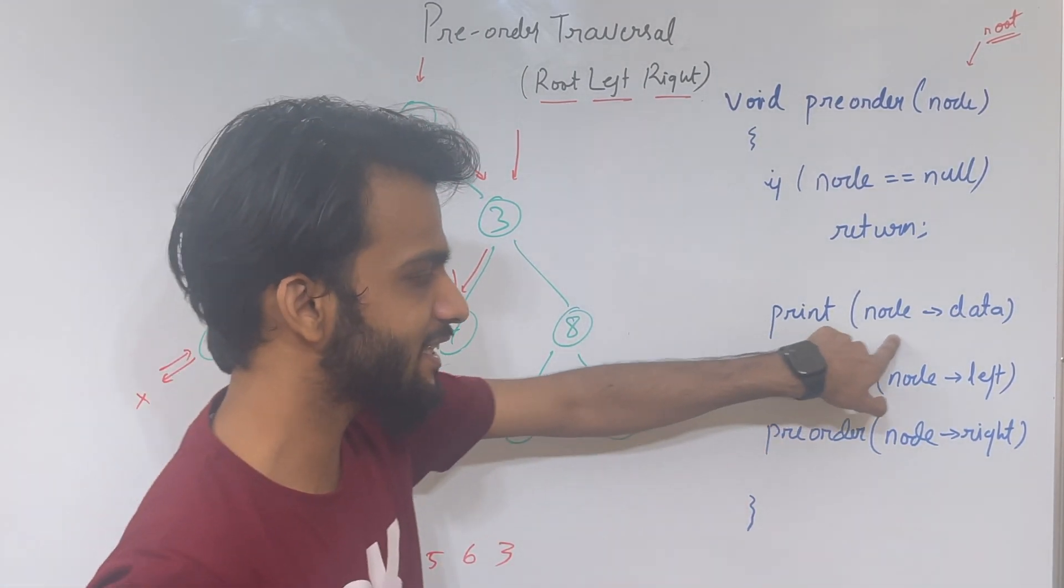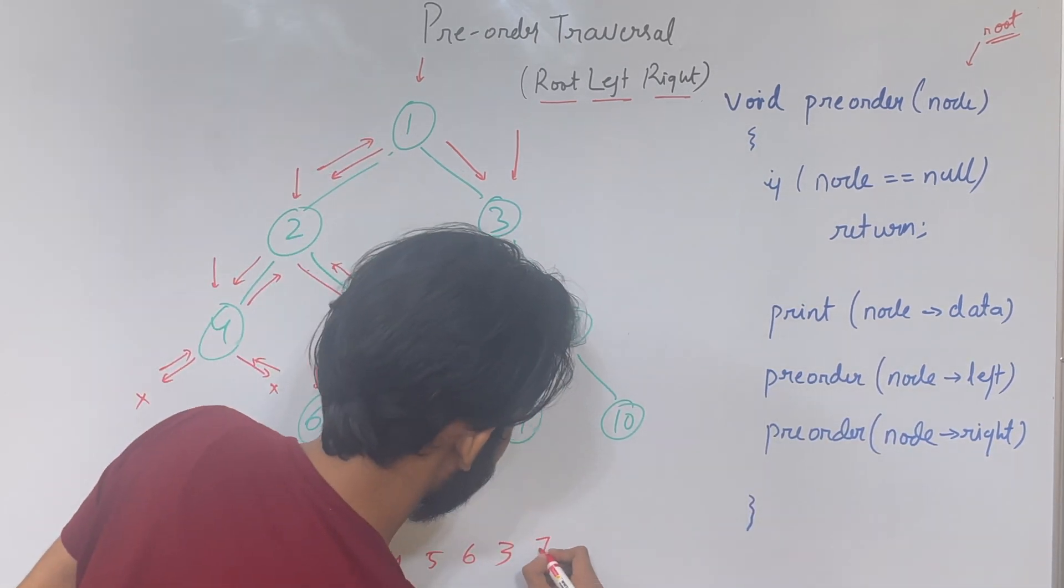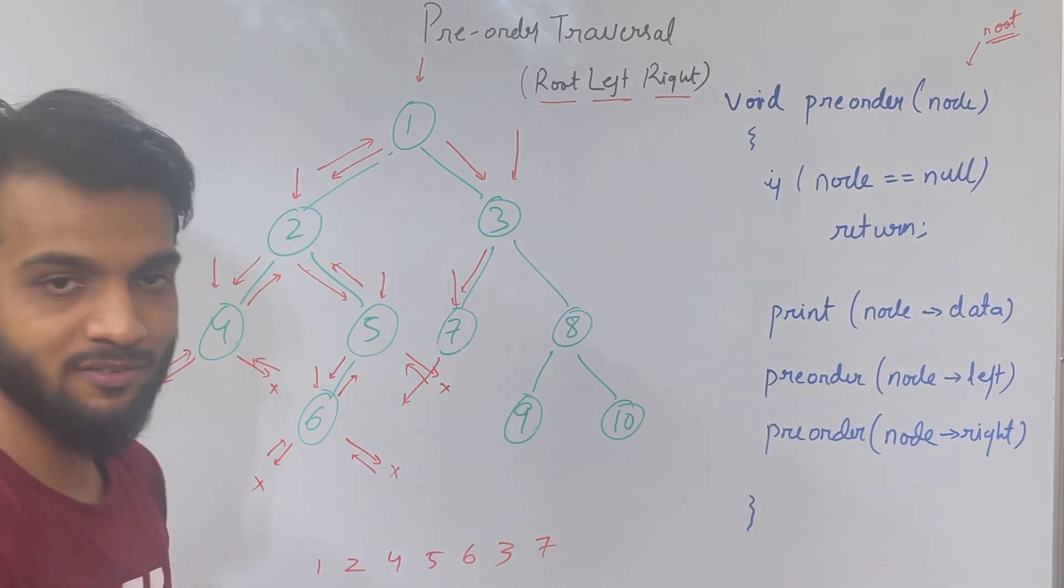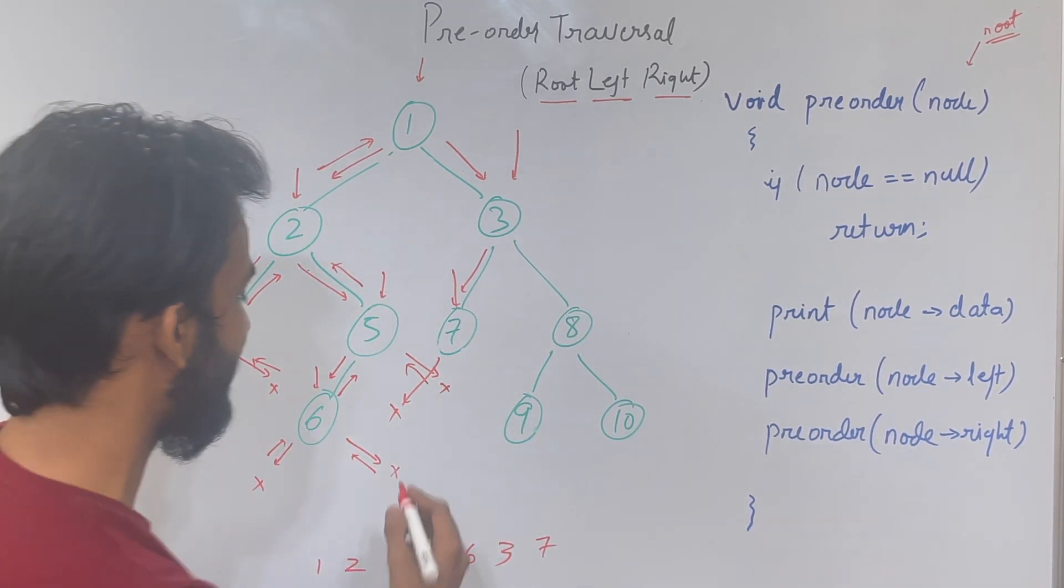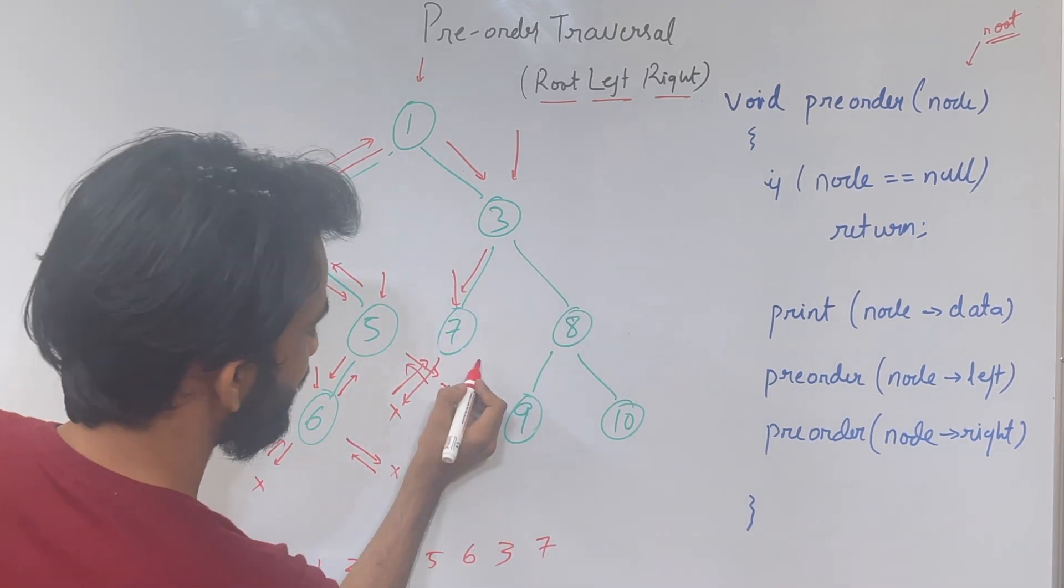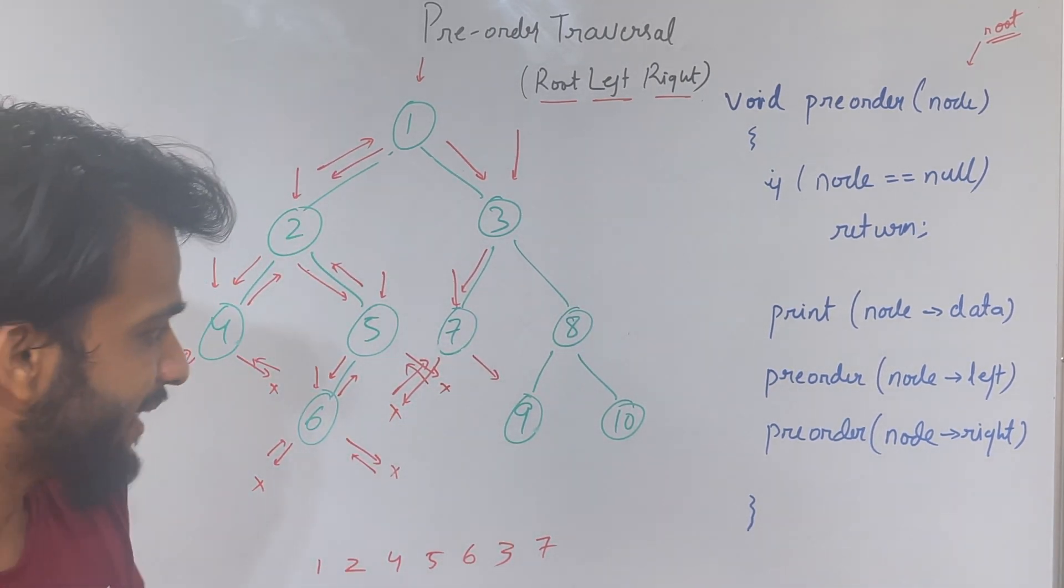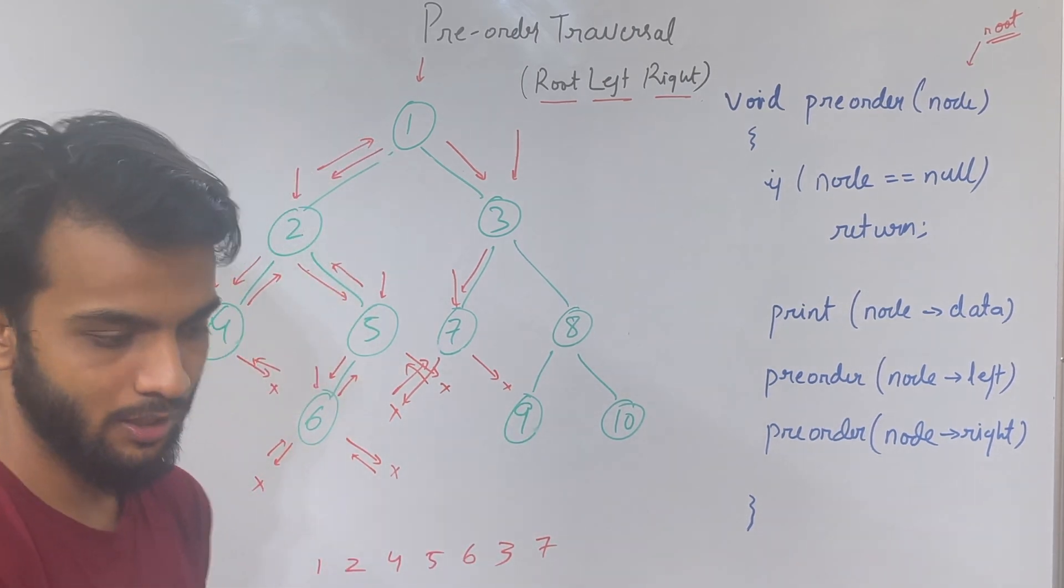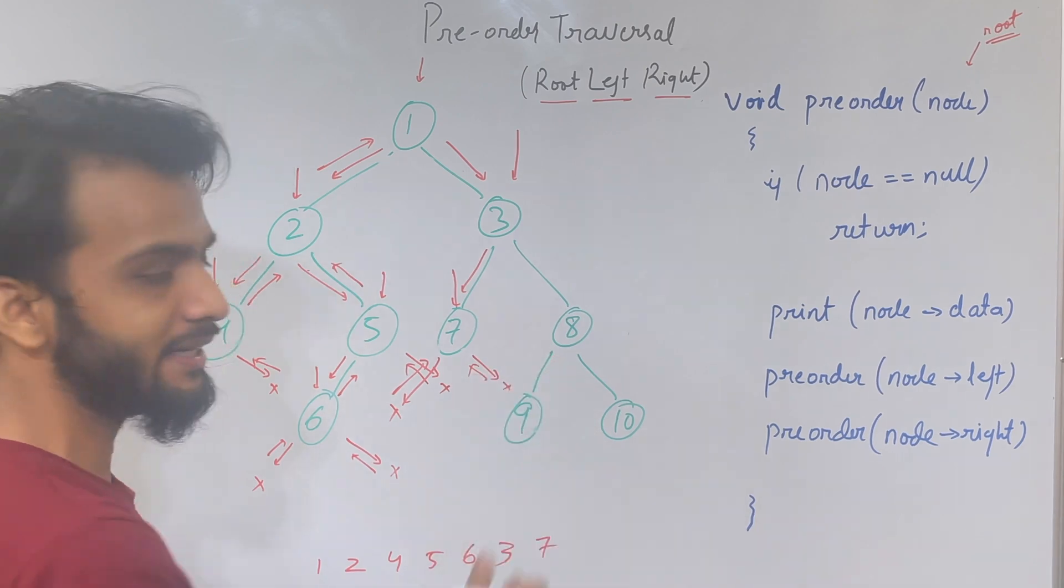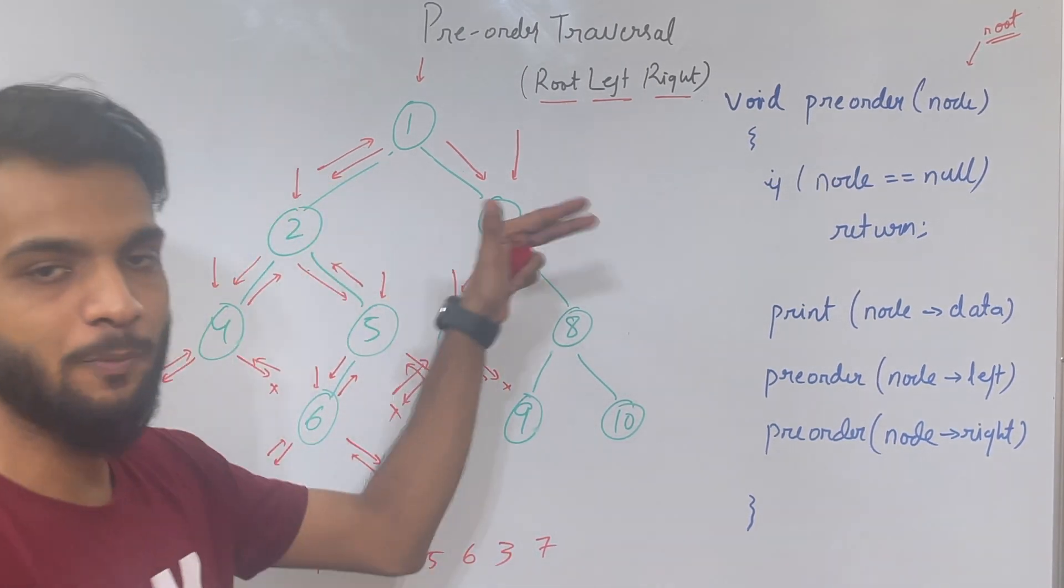When we come to node 7, again it says print, so we print it. Node 7 says go to the left. Comes to the left, finds null, goes back. For node 7, print and left is done, so it goes to the right. The moment it goes to the right, it finds null and comes back. For node 7, print, left, right is completed. The recursion is over, goes back.